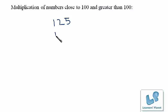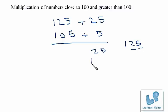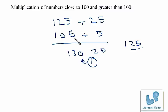One more example: 125 and 105. This is plus 25 and this is plus 5. We multiply these two numbers to get 125, but we write only the last two digits — 25 — here, and carry the 1 forward. Now we cross add: 125 plus 5 is 130, and we carry the 1 forward. So the product of 125 and 105 is 13125.